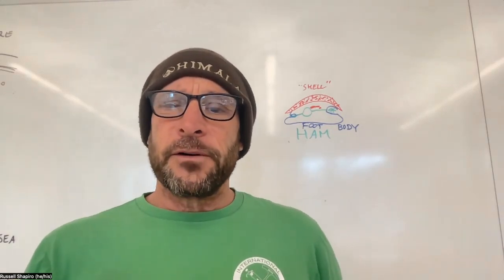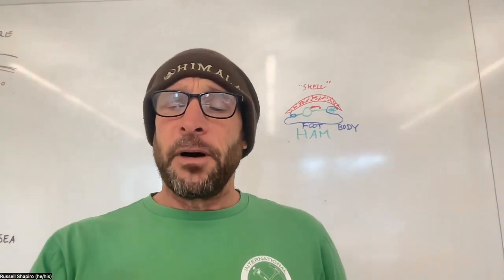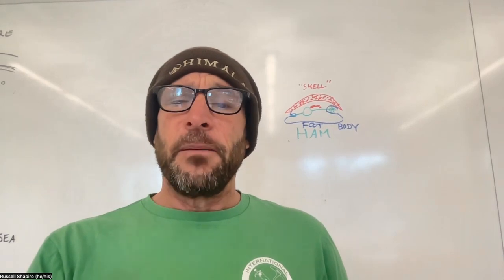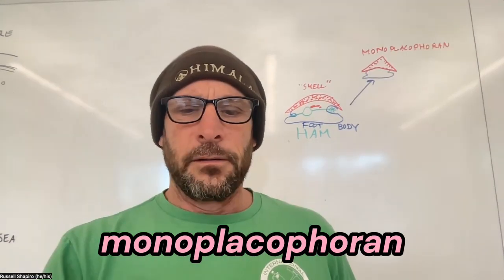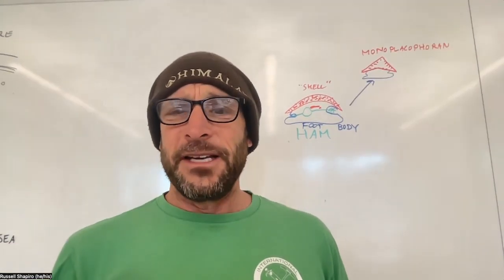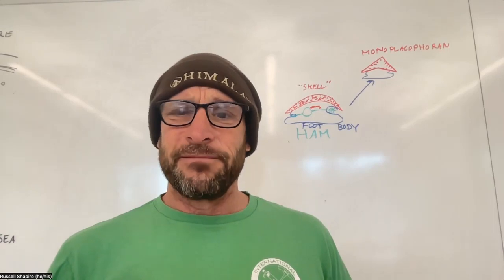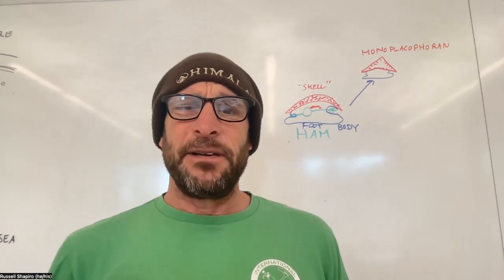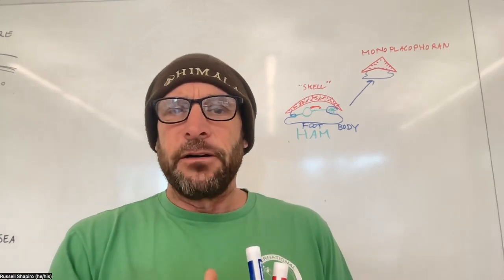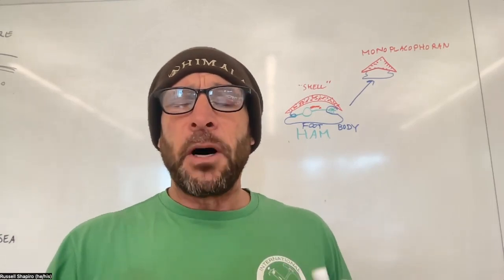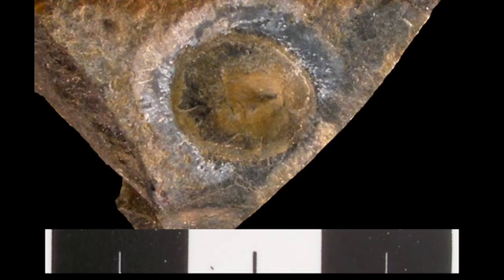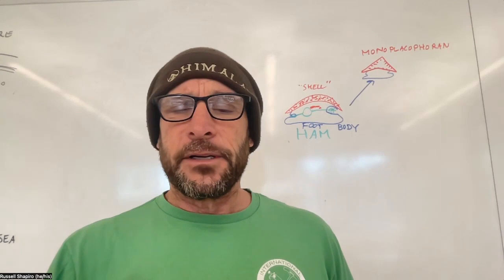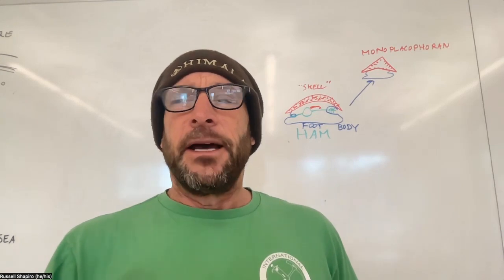What do we want to build first? Let's build the mollusk that's most like the HAM — the monoplacophorans. They're the easiest ones; it's the same deal, we just turned it into a shell. Monoplacophora means one shell. We find them all the way back in the Cambrian, and we still find them around today.